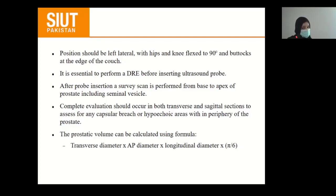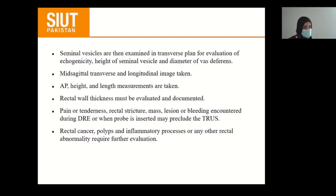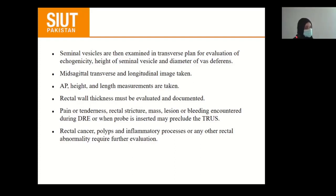Complete evaluation should occur in both transverse and sagittal sections to assess for hypoechoic areas within the periphery of the prostate. The prostatic volume can be calculated using the formula: transverse diameter × AP diameter × longitudinal diameter × π/6. Seminal vesicles are then examined in the transverse plane for echogenicity, height, and diameter. Mid-sagittal, transverse, and longitudinal images are taken. Anteroposterior height and length measurements are taken. Rectal wall thickness must be evaluated and documented. Pain, tenderness, rectal stricture, mass, or bleeding during DRE may preclude the transrectal ultrasound. Rectal cancer, prolapse, or inflammatory processes require further evaluation.